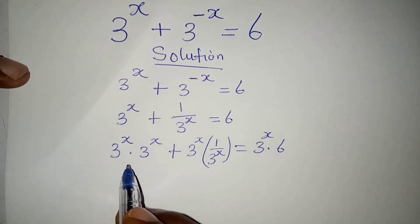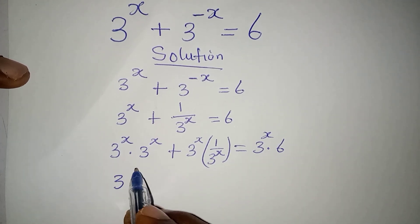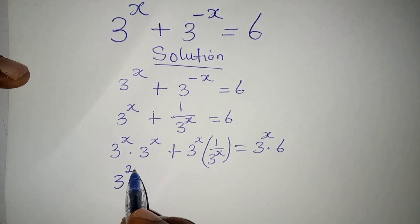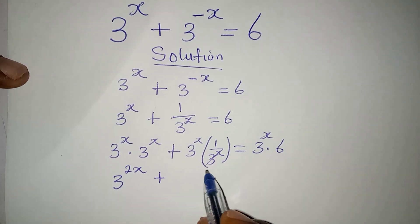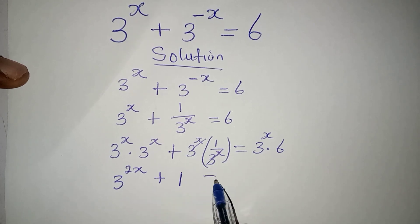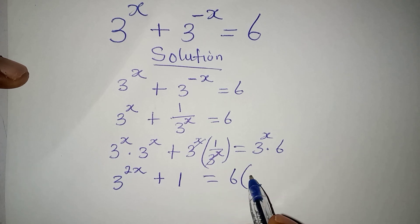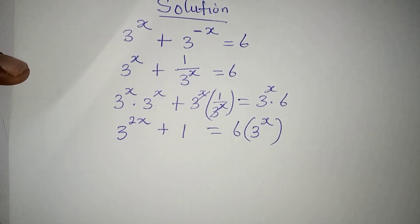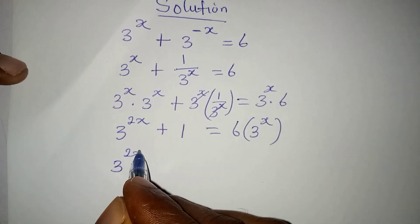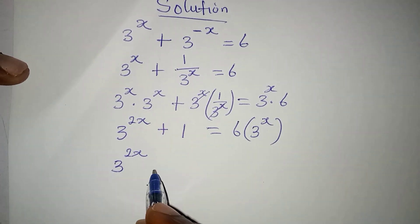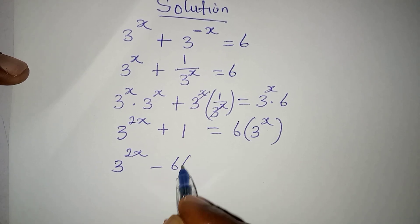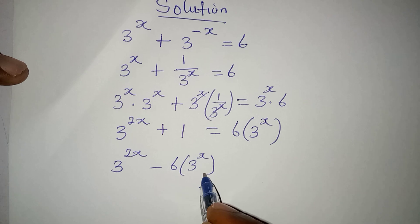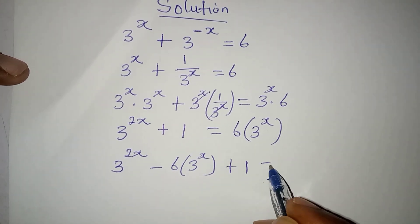Taking a step further, I will pick 3 and then add the powers. So I have 2x, and then this will cancel this, and I have 1 here, which is equal to 6 multiplied by 3 to the power of x. What I will do next is to rearrange this. So I have 3 to the power of 2x, and if this comes here it becomes minus 6 into 3 to the power of x, then plus 1 equal to 0.